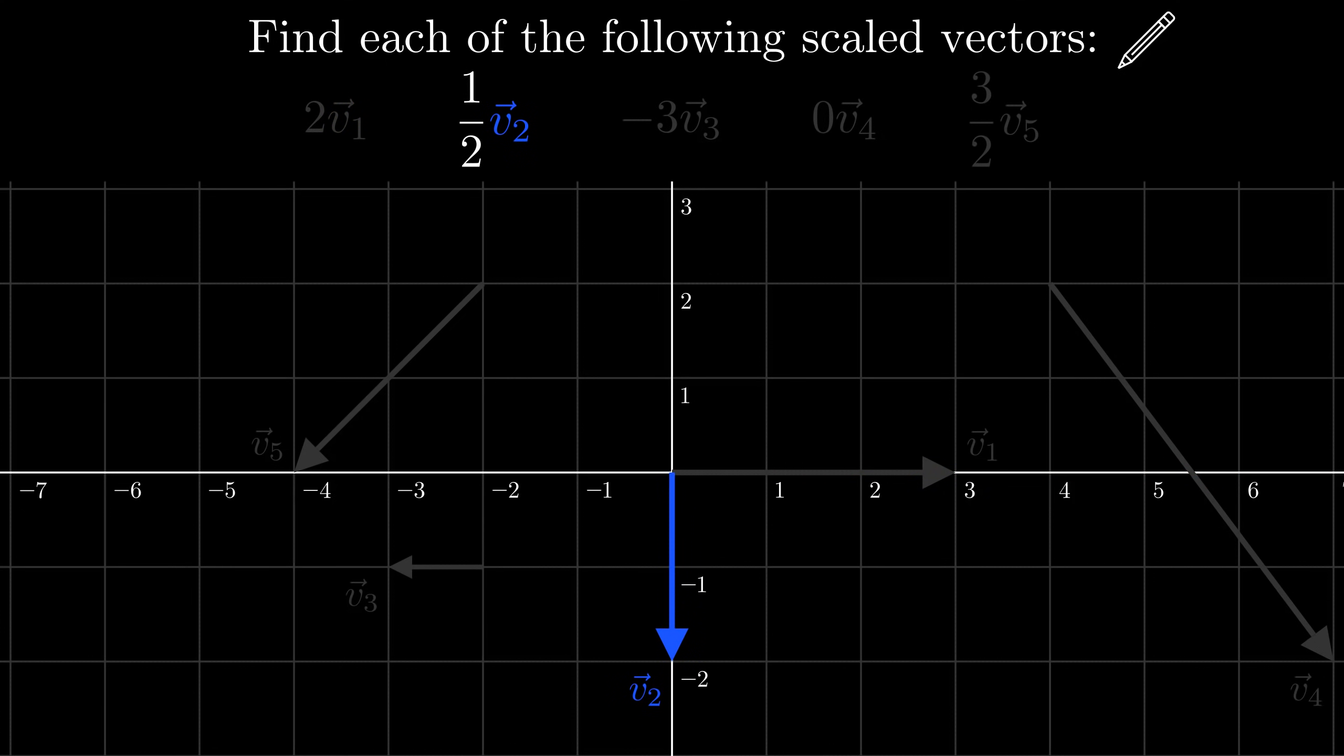Next, we need to find 1 half times V2. This time, the vector gets smaller because we are scaling it by a half. It originally went down to negative 2, but when that is cut in half, it instead goes to negative 1. The next vector to find is negative 3 times V3. This time we are multiplying by a negative number. It originally goes 1 to the left, so now it needs to go 3 to the right. Now to find 0 times V4. This one is a bit different. Any number times 0 is 0, so the length of 0 times V4 is 0. This means that the result is the 0 vector. Finally, we need to find 3 halves times V5. Multiplying by a fraction like this can be confusing at times. We can do this by first scaling it down by a half and then scaling it up by 3, making for a total scaling of 3 halves.